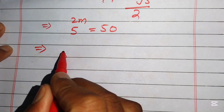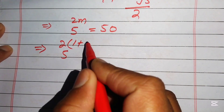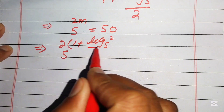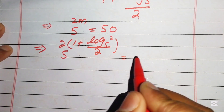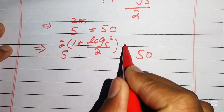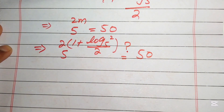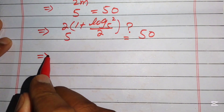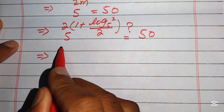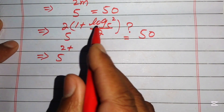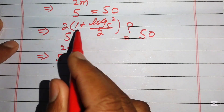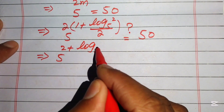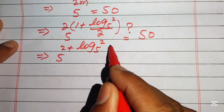Substituting, we get 5 to the power of 2 times (1 plus log base 5 of 2, divided by 2) equals 50. Multiplying 2 through the bracket, the 2 and 2 cancel in the second term, giving 5^(2 + log base 5 of (5²)) — we check whether this equals 50.